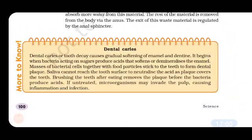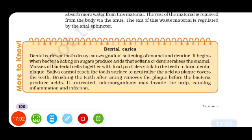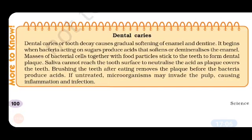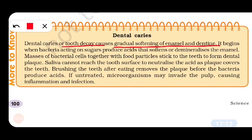Now dental caries: dental caries causes gradual softening of enamel and dentine. It begins when bacteria acting on sugars produce acids that soften or demineralize the enamel. Bacteria and sugar — some people eat a lot of glucose and so they suffer from dental caries.